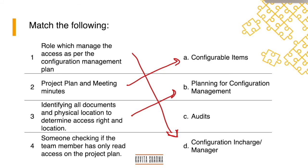Someone checking if the team member has only read access on the project plan. So third set of eyes checking or happens in audit wherein whatever the access rights which are mentioned, whether they have been implemented or not. Great, you did good.